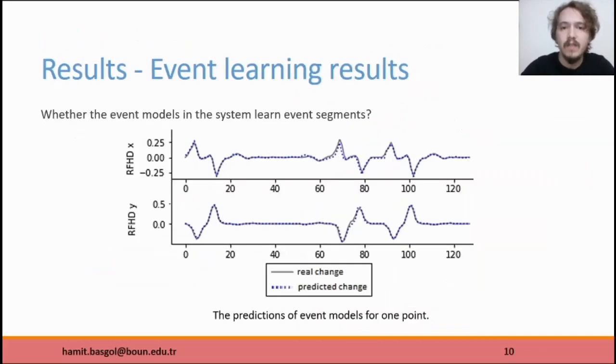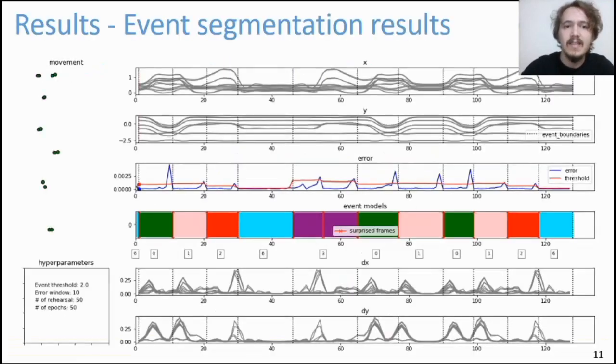The figure shows how good our event models are in predicting sensory change. The solid line shows real sensory change, whereas the dashed line shows predictions of event models. Recall that more than one event model is generated for the segments. In this slide, I will show the movement and how our method segmented. Recall that the behavior is defined as a person picks up an object and places it on a surface in front of him in the dataset.